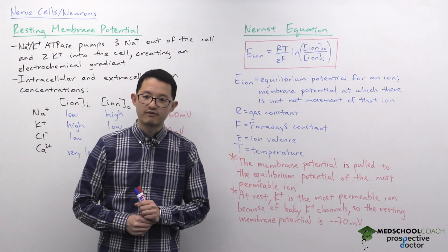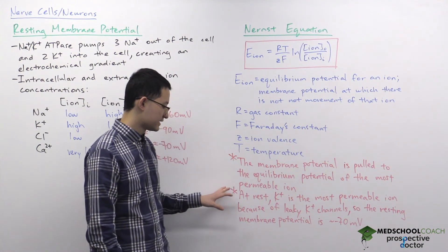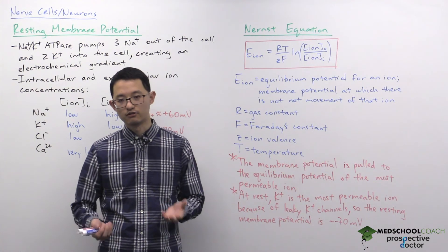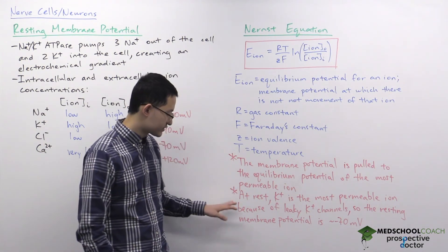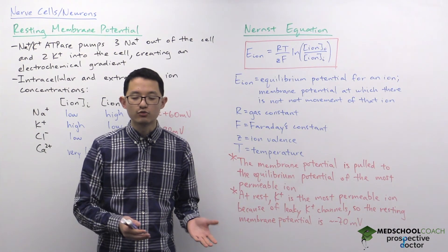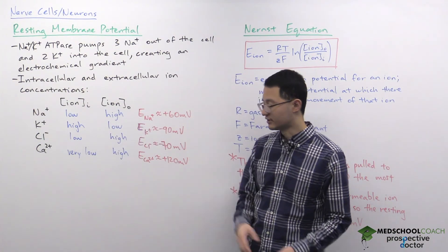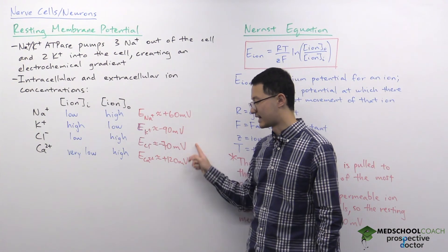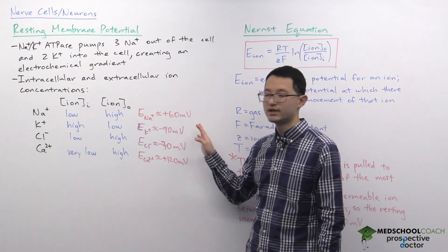At rest, the most permeable ion is potassium, because cells have leaky potassium channels that are essentially always slightly open, allowing potassium to continuously leak out of the cell. Since potassium is the most permeable ion at rest, the membrane potential is pulled close to potassium's equilibrium potential, giving a resting membrane potential of approximately negative 70 millivolts. It's not exactly negative 90 millivolts because other ions also have some permeability.